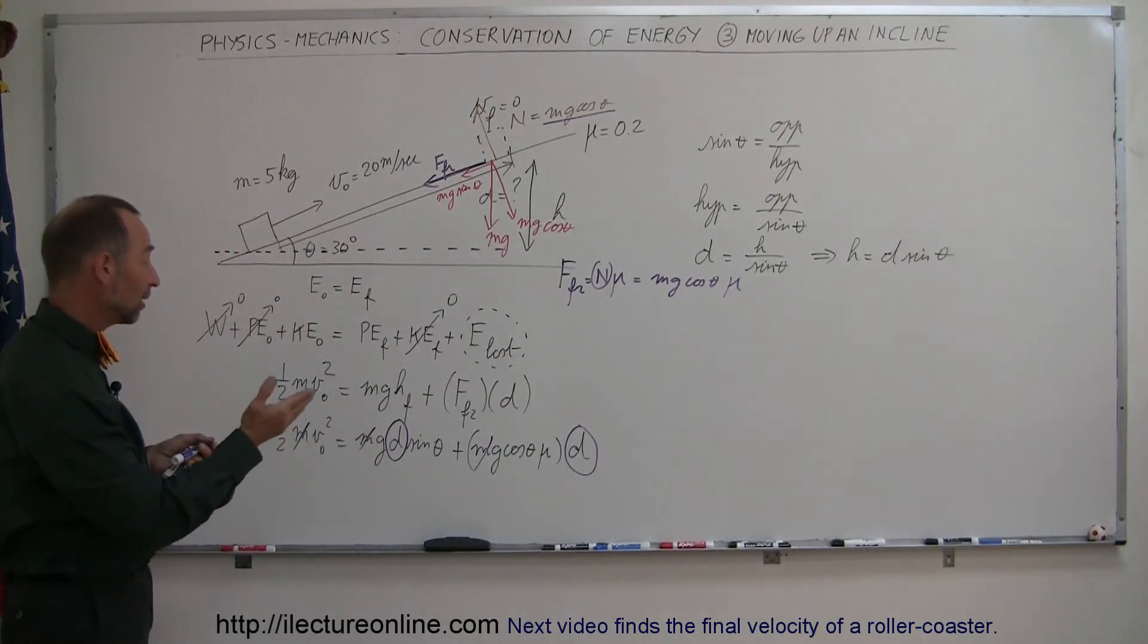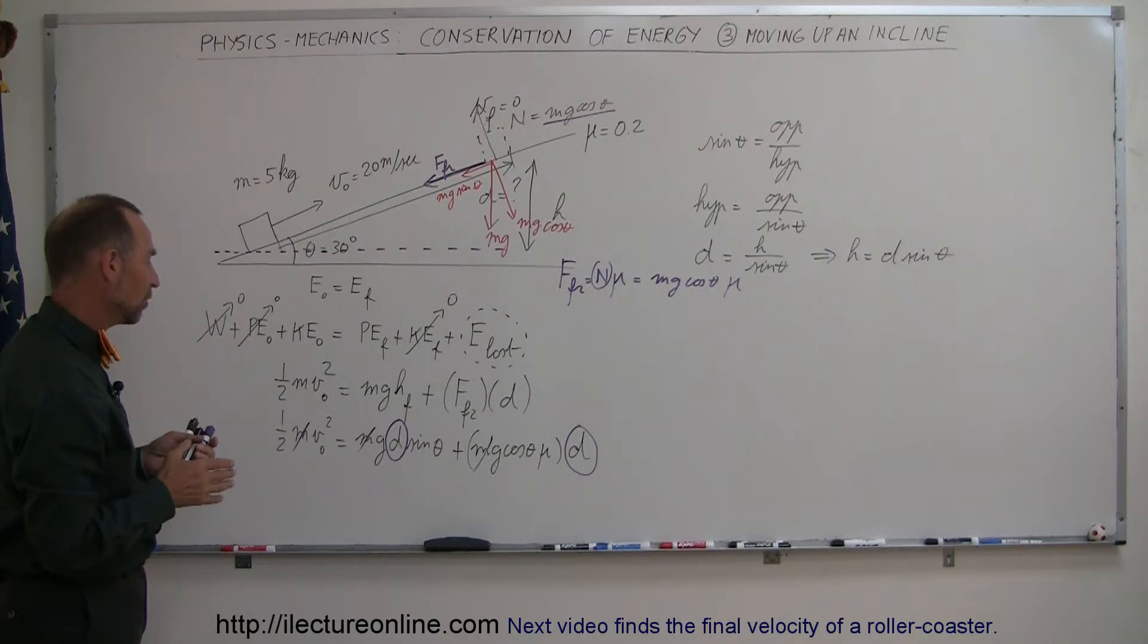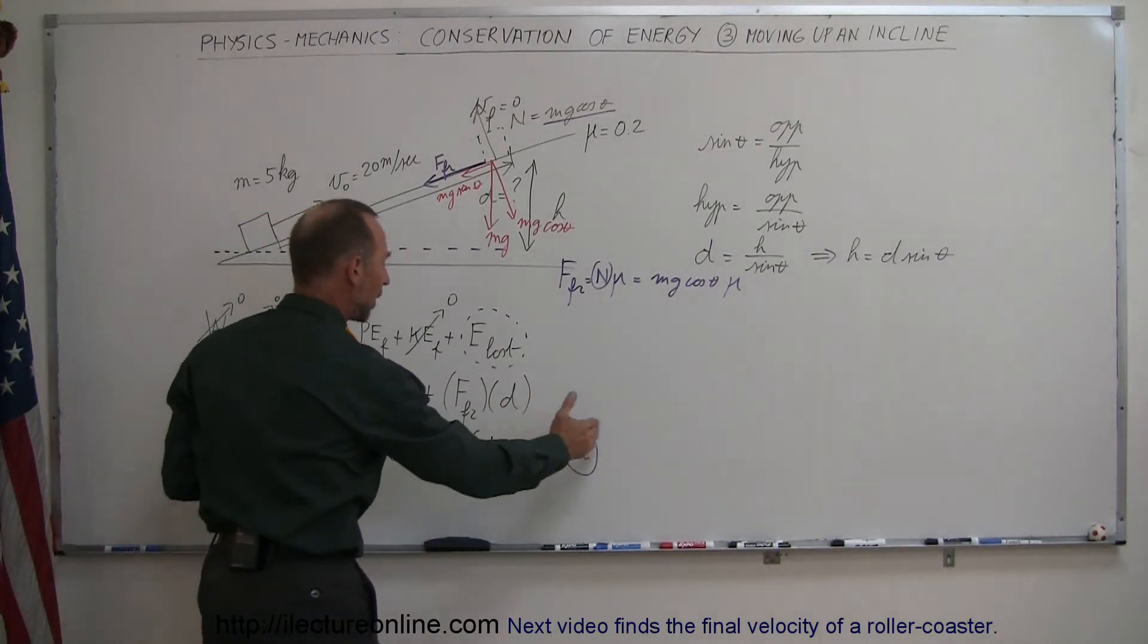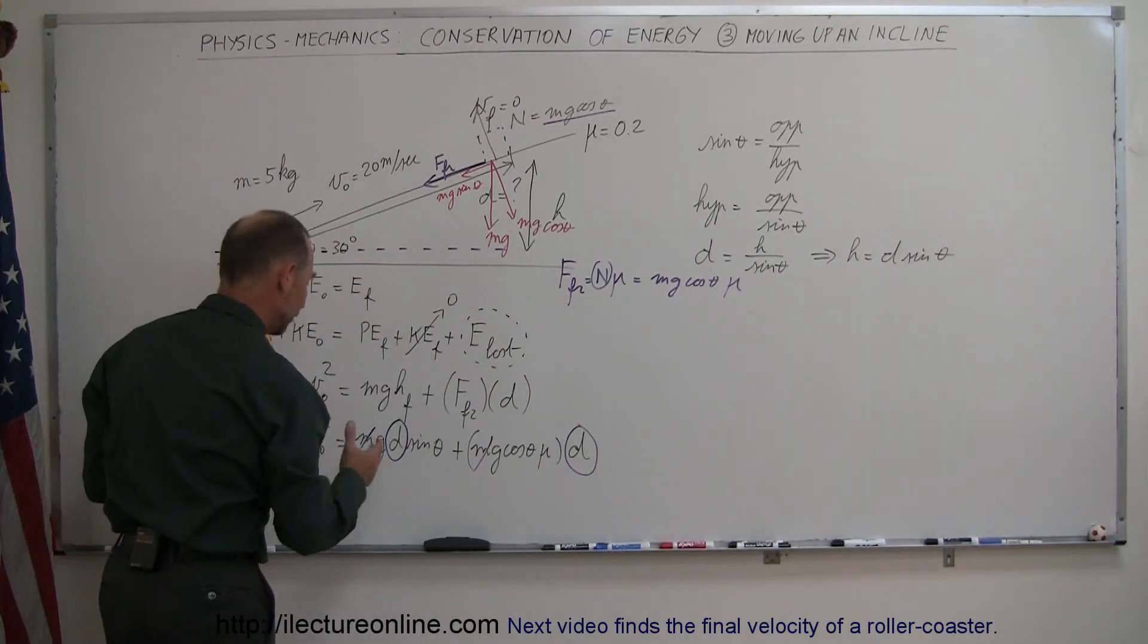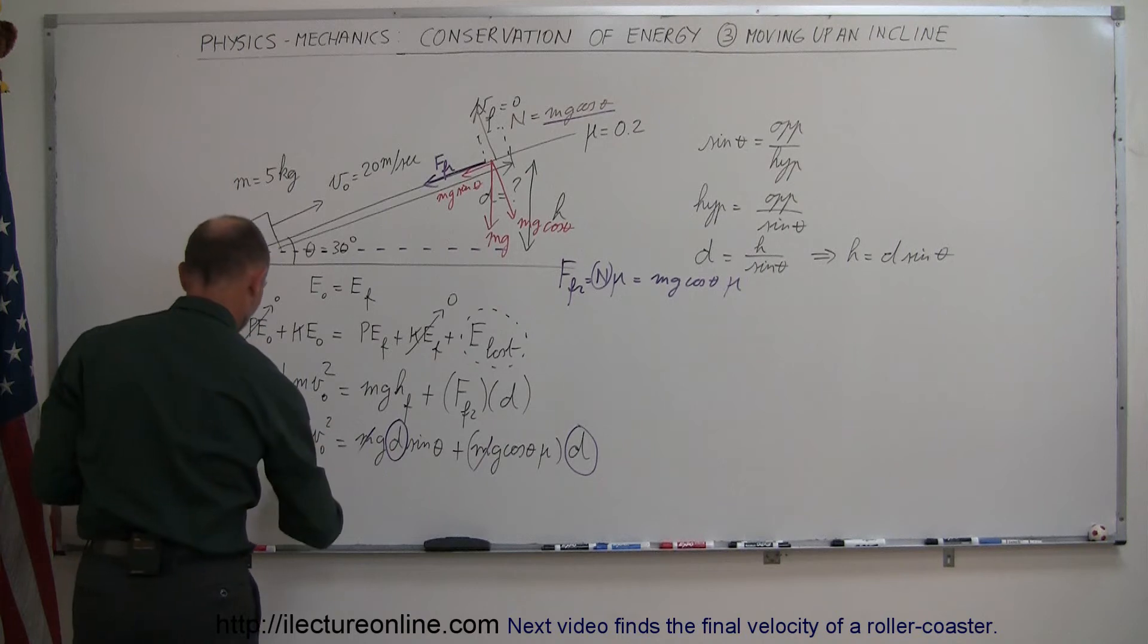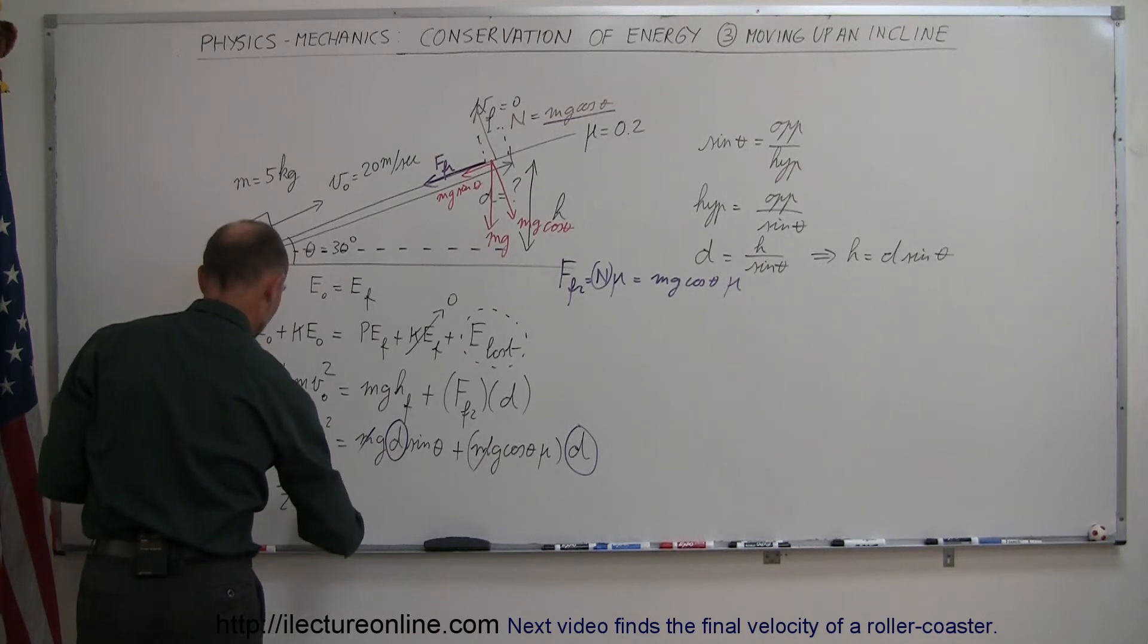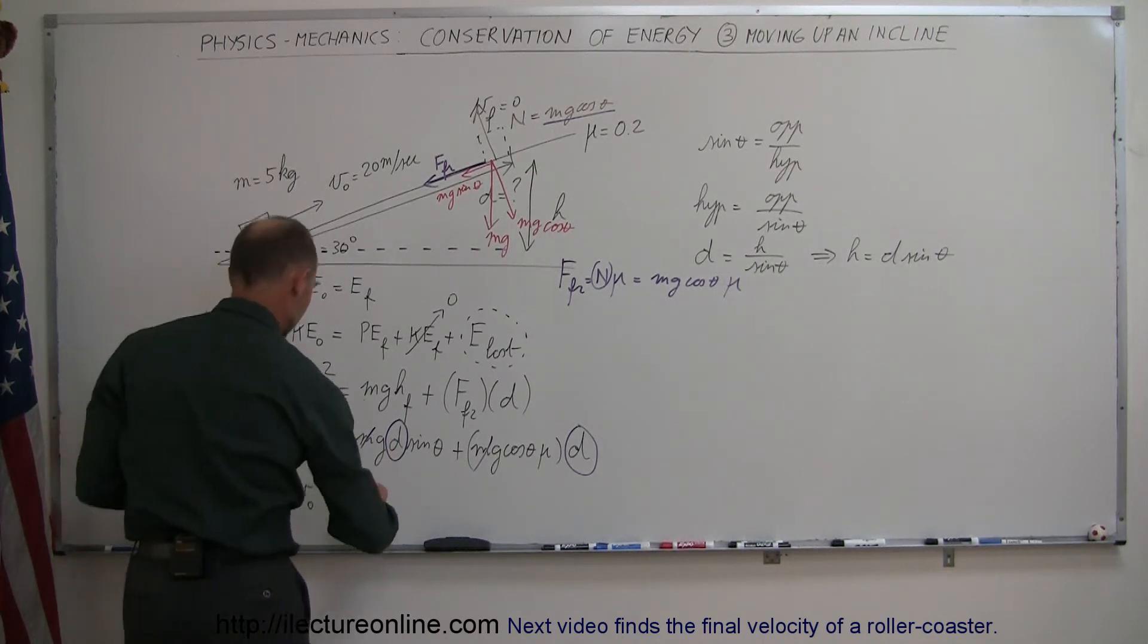And now we have to algebraically solve this equation for D. So the best way to do that is to factor out the D and then divide both sides by what's left.